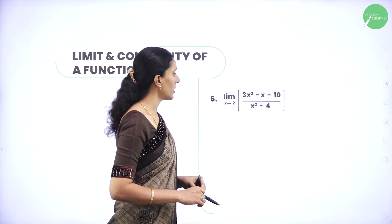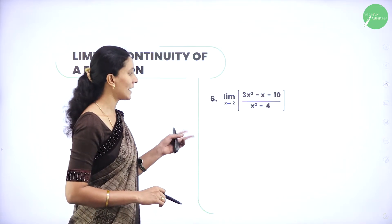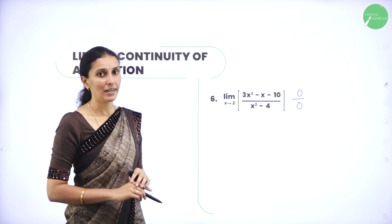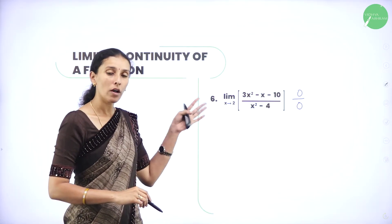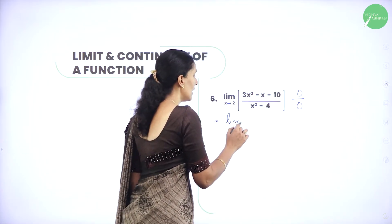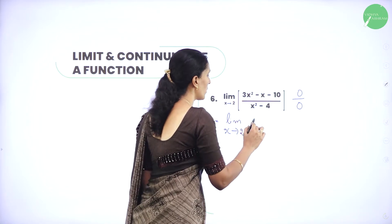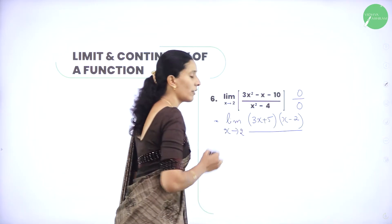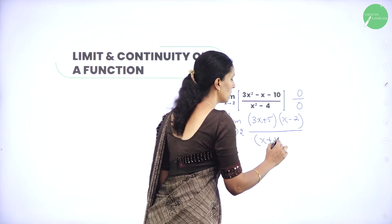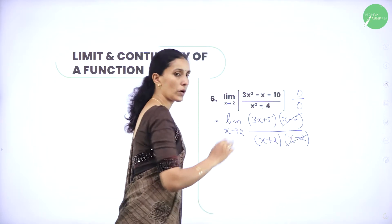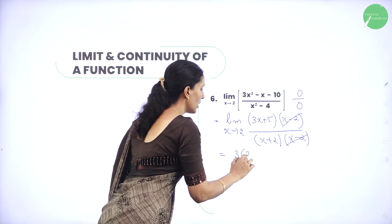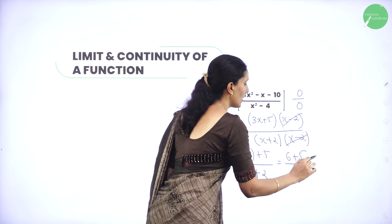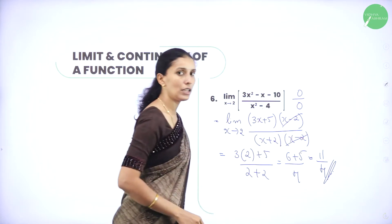Next: limit of 3x square minus x minus 10 divided by x square minus 4 as x tends to 2. Substituting x equals 2 gives the 0 by 0 form. Resolving the factors: the numerator is 3x plus 5 times x minus 2, and the denominator is x plus 2 times x minus 2. Cancel x minus 2, then substitute x equals 2: 3 into 2 plus 5 divided by 2 plus 2 equals 11 by 4. This is the limit of the given function.